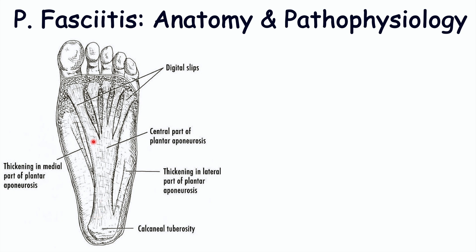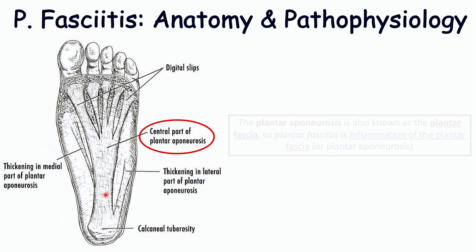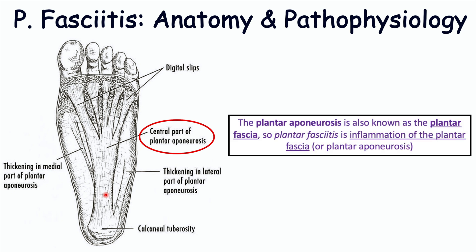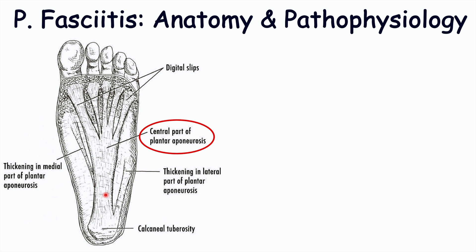The plantar aponeurosis is separated into three segments: the medial, central, and lateral segments. The central segment is the thickest and is the part most commonly affected in plantar fasciitis. More specifically, the part of the central plantar aponeurosis closest to the calcaneus is most commonly affected, which is why we see heel pain in plantar fasciitis.